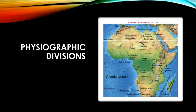Africa is located in all four hemispheres. The prime meridian passes near Accra, the capital of Ghana, in the west of this continent. The great explorers David Livingstone and Henry Stanley were the first to explore the interior of this continent. Early human ancestors have lived in Africa for more than 5 million years. Africa is nicknamed the 'mother continent' as it was the oldest inhabited continent on Earth. The diverse geographical conditions are the main reason for its heterogeneous culture.